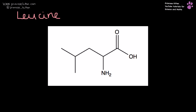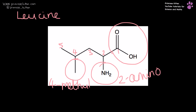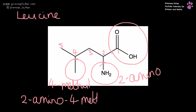Leucine here — obviously very similar to isoleucine, just slightly different. Here is our carboxylic acid group: one, two, three, four, five. We have a 2-amino and we have a 4-methyl — 2-amino-4-methylpentanoic acid.